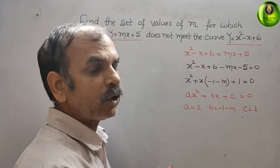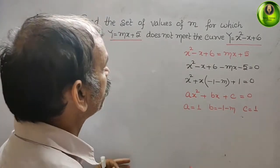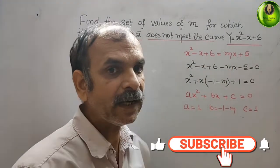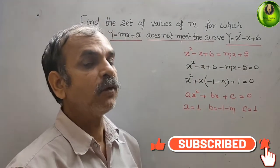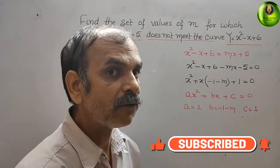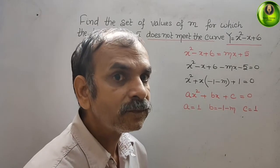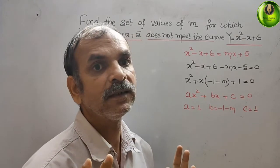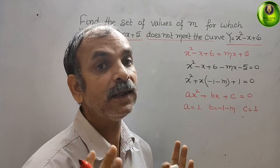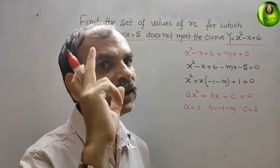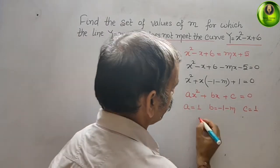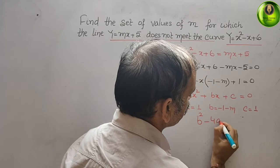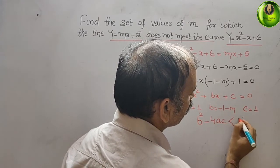See the question — what they have given? The line does not meet the curve. That means our discriminant b² - 4ac is less than 0. We can say b² - 4ac < 0.